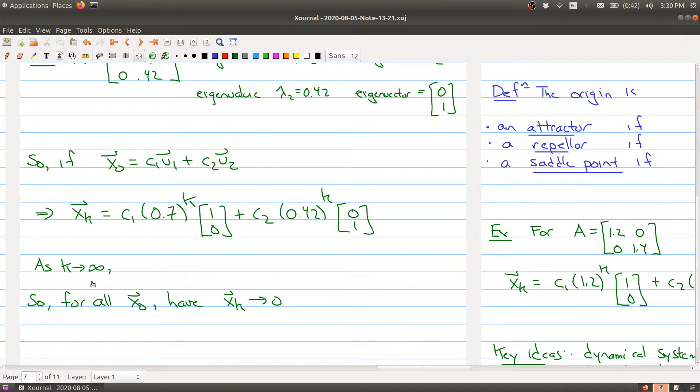So as k goes to infinity, we have that 0.7 to the k approaches 0, and 0.42 raised to the power of k also approaches 0. So for all X naught, regardless of where you start, you're going to have that X_k is going to approach the vector [0, 0]. It doesn't matter where you start. You're always going to end up at the origin.